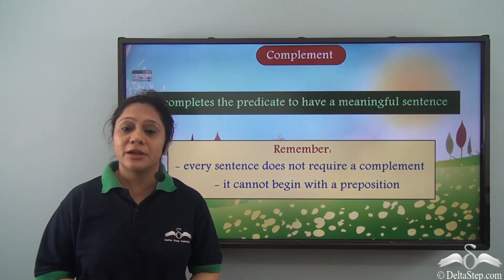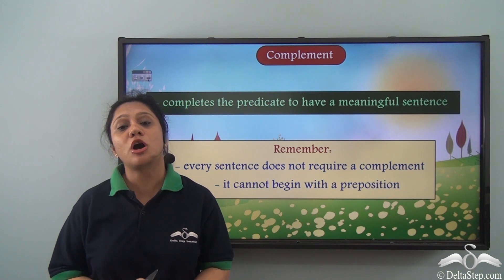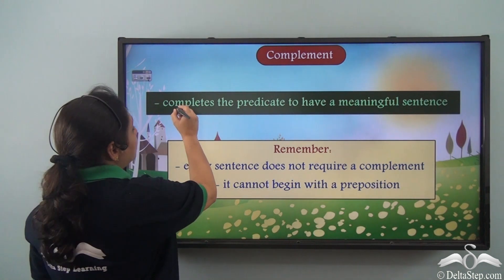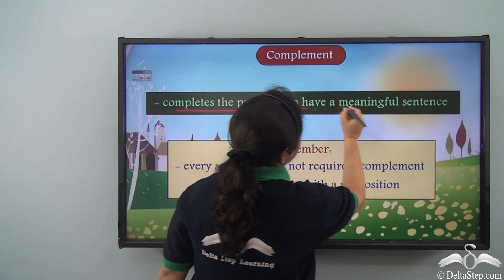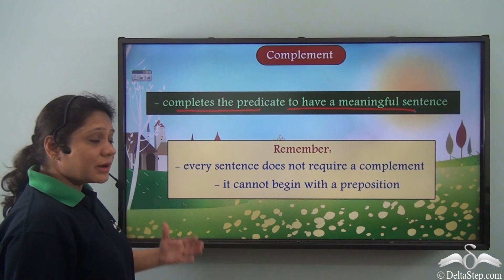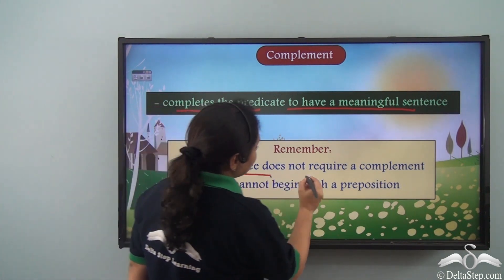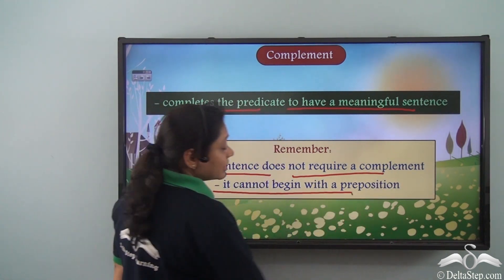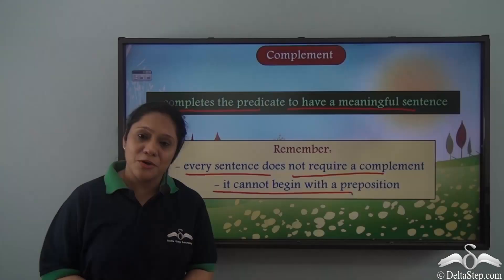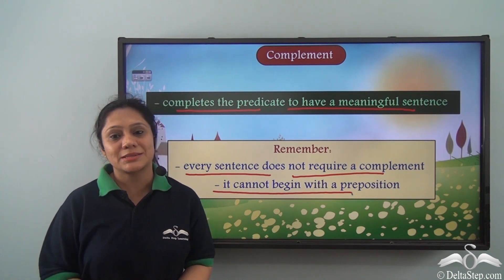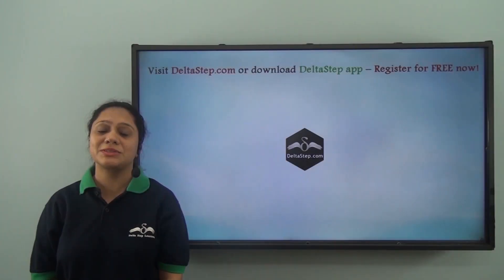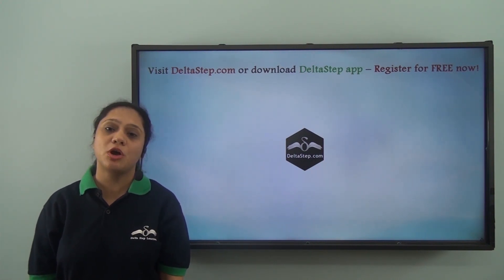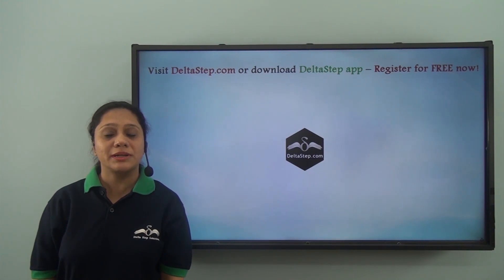So what did we learn today? We have learnt about complements in detail. A complement completes the predicate to have a meaningful sentence. Remember that every sentence does not require a complement and that a complement cannot begin with a preposition. I hope that today's lesson was easy to understand. Don't forget to subscribe to our channel.